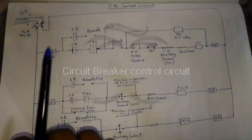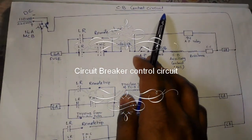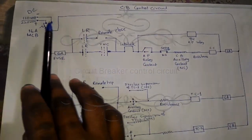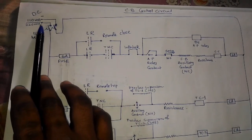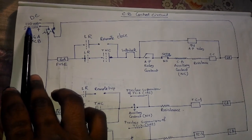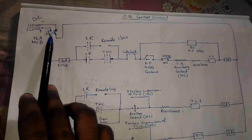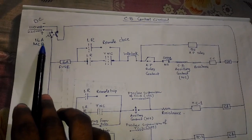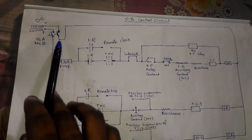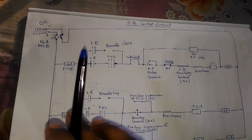Today we discuss the circuit breaker control circuit. We use DC voltage — 110V DC or 220V DC. This is a 16A DC MCP, 2-pole MCP. This is the negative terminal and this is the positive terminal.